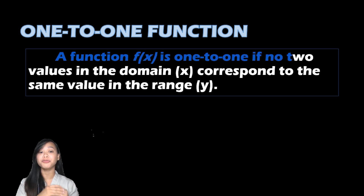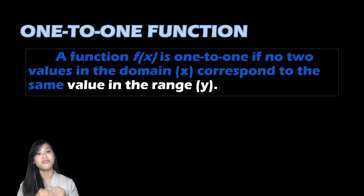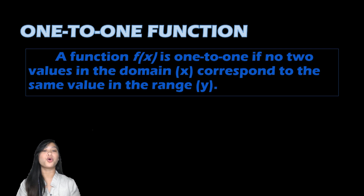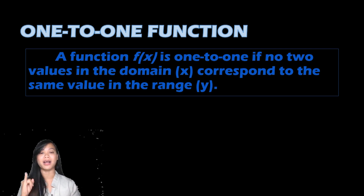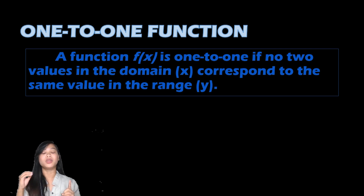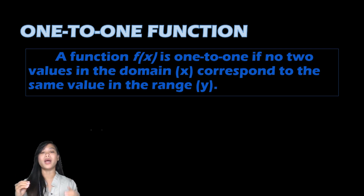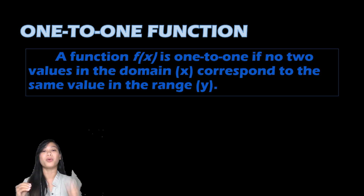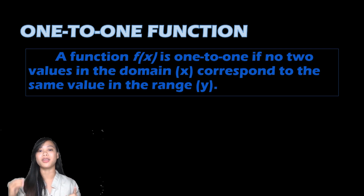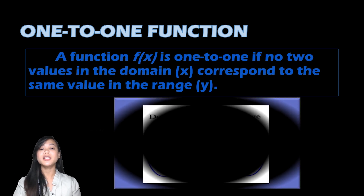Let us define what is a one-to-one function. A function f(x) is one-to-one if no two values in the domain, or x, correspond to the same value in the range, or y. So your domain should correspond only to one value in your y, and your range should correspond only to one value in your domain.